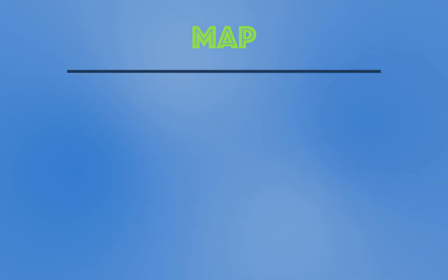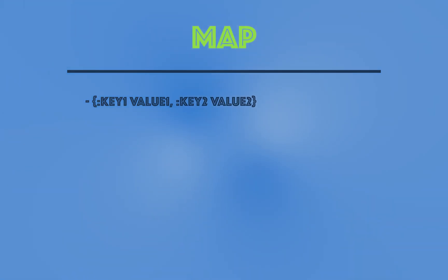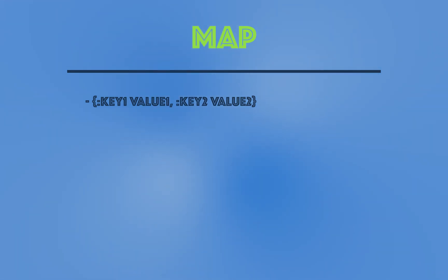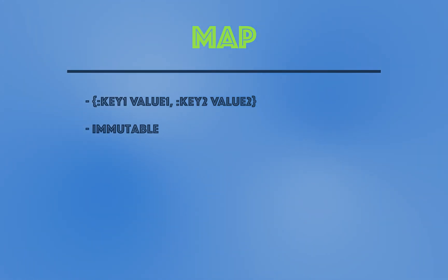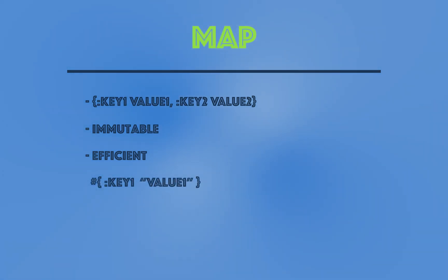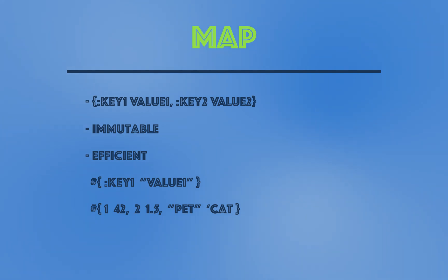Now let's talk about maps. Maps are similar to sets in the way they store values, but in addition they store keys associated with those values. In other languages you might have them as hashes or hash maps — they are simply called maps in Clojure. In the same way as sets, they are immutable, so another thread cannot change your map while you are working on it, and they are very efficient to manipulate. Here are some examples: you can have key "one" with value "one" as a string, or 1 mapped to 42, 2 mapped to 1.5.